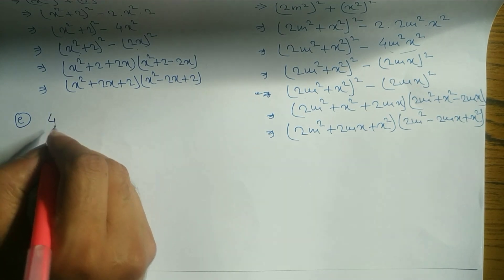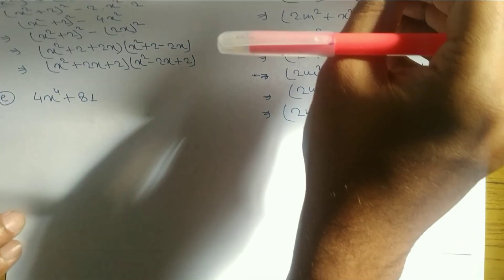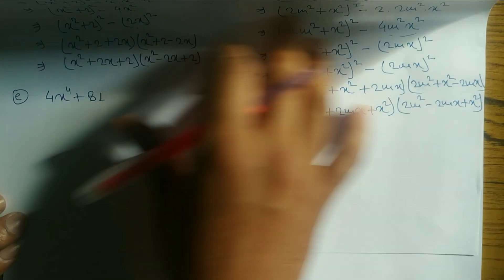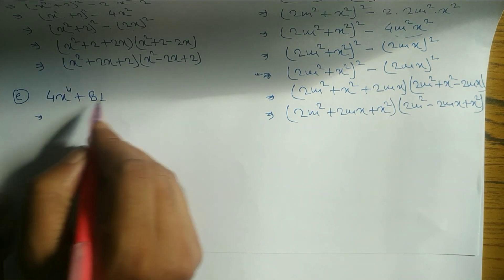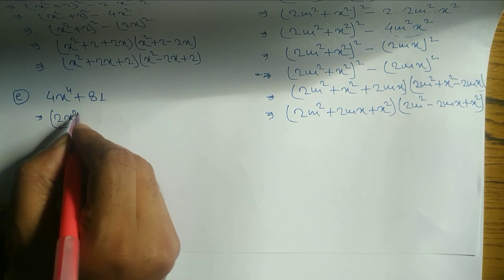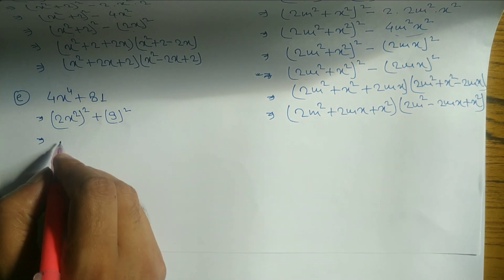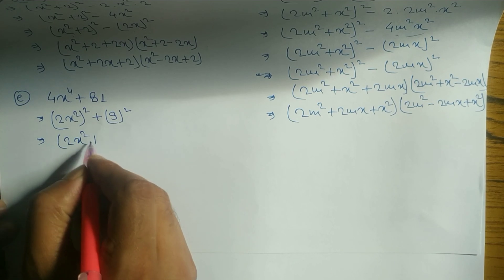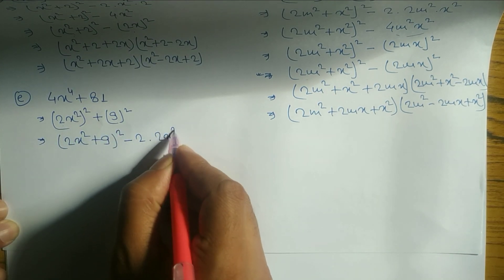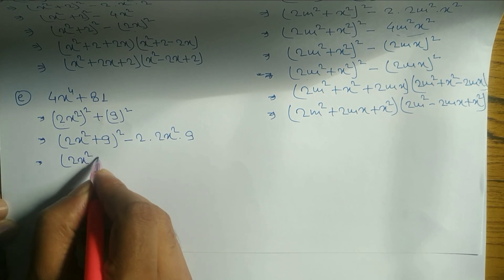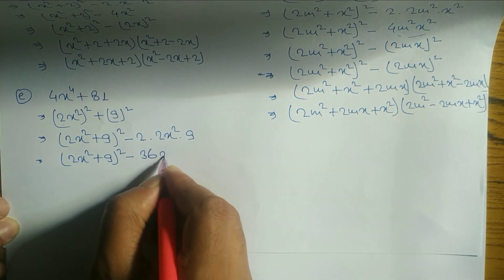Next — question number 1e: 4x⁴ + 81. If a question is a difficult type, I will do it; if it is a similar type, you should try it yourself. We convert into whole squares: (2x²)² + (9)². We apply the a² + b² formula with a = 2x² and b = 9: (2x² + 9)² − 2 × 2x² × 9 = (2x² + 9)² − 36x².